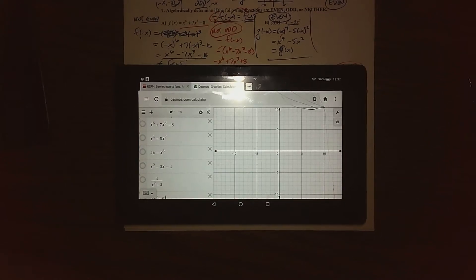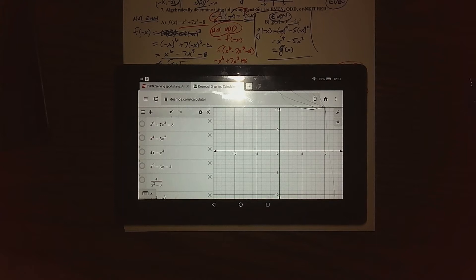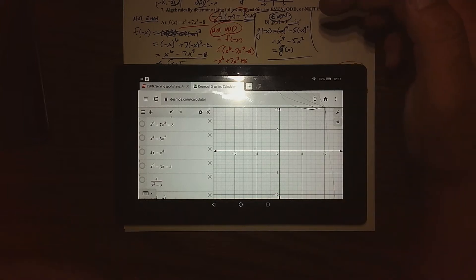Alright sports fans, as you can see my TI-84 calculator is still on the fritz. You're going to have to struggle through my Kindle and Desmos, but all we really need to do is pretty simple stuff in terms of evenness or oddness.